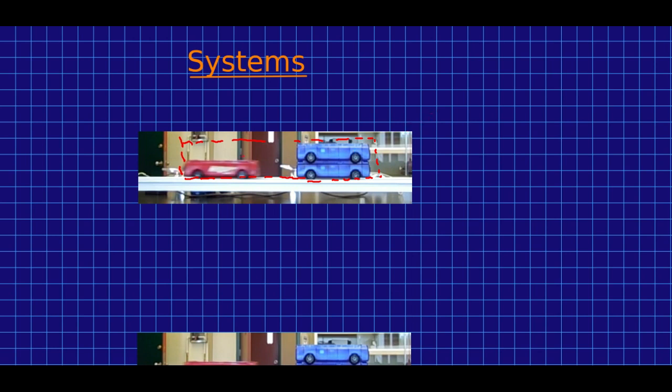We call the part of the world that we're interested in the system, and it's bounded by some boundary that we have made, so we call that the system boundary. And then there's everything else, and everything else we refer to as the environment.